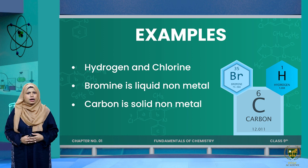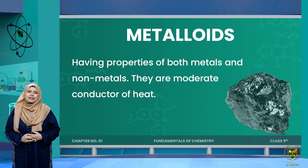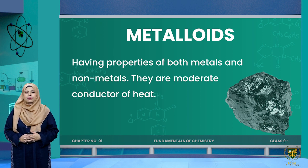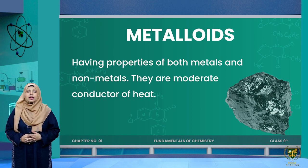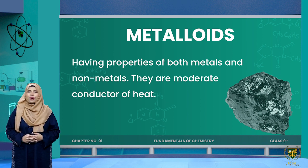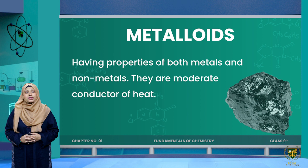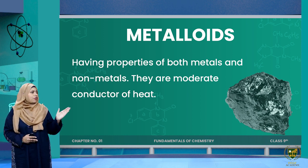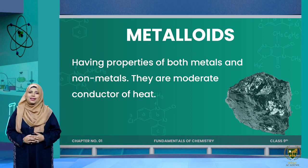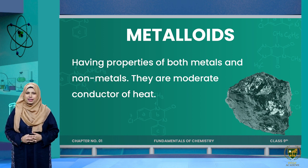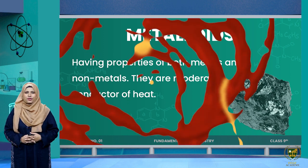Bromine is a liquid non-metal, and carbon is a solid non-metal. Metalloids lie somewhere between metals and non-metals — meaning they possess some properties of metals and some properties of non-metals. There are only a few metalloids, and they possess properties of both metals and non-metals.